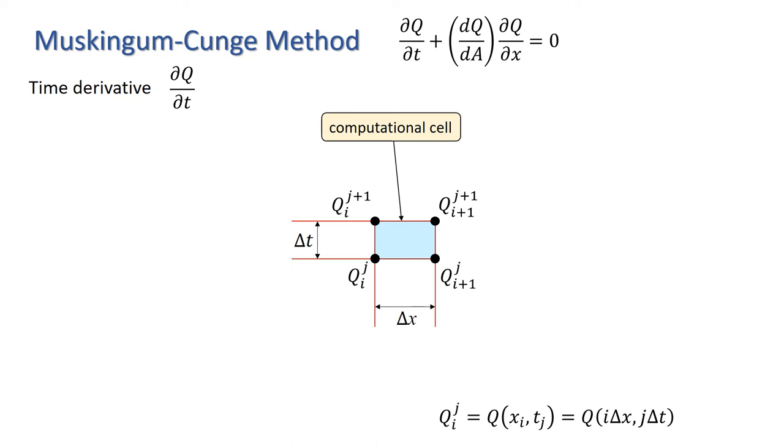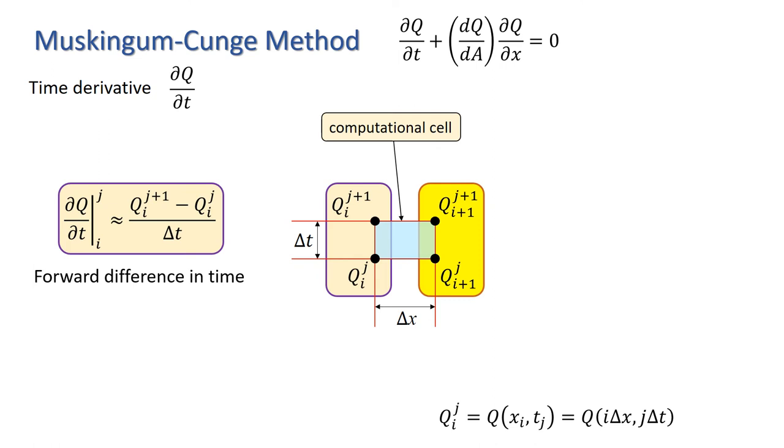For the time derivative, we will use a forward difference approximation. With the four points in our computational cell, we could do this either along spatial step i, giving us this approximation, or spatial step i plus 1, giving us this approximation.